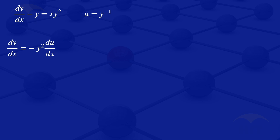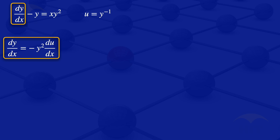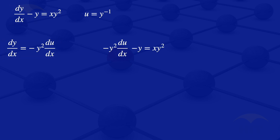Now looking at the original equation, we have dy/dx, and we are saying dy/dx equals this function here. So we substitute it in: minus y squared times du/dx, then minus y equals x y squared. Since we need the coefficient of du/dx to be 1 for a linear ODE, we divide through by minus y squared. We get du/dx plus y to the power minus 1 equals minus x.